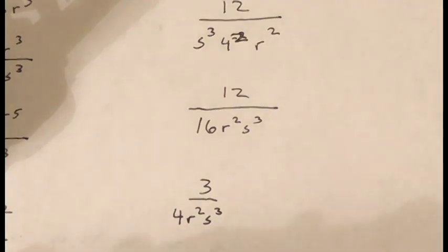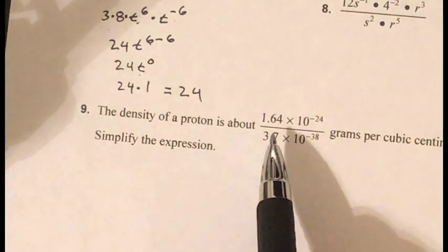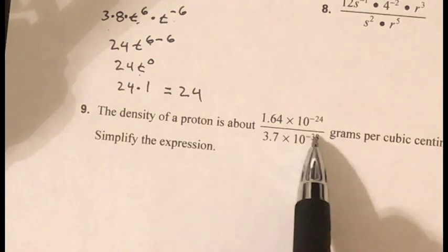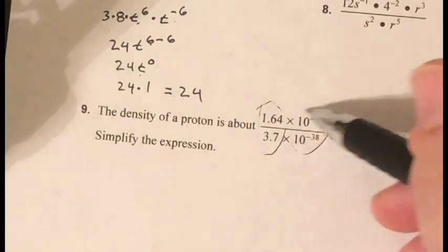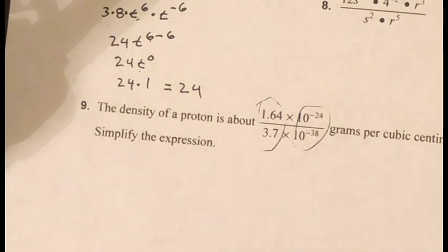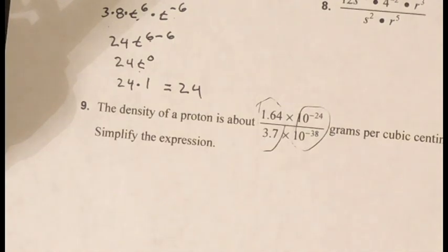Problem nine: 1.64 times 10 to the negative 24 divided by 3.7. Simply divide those two decimal numbers and divide the powers of ten separately, and you'll have your simplified answer. The rules are really easy — it's the repeated application that gets a little confusing, but you know how to find me. Ask questions and I'll see you next time.